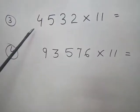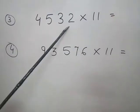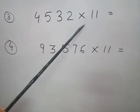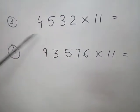Yes, our third question is 4532, a 4-digit number multiplied by 11. See here, first digit 4 as it is.